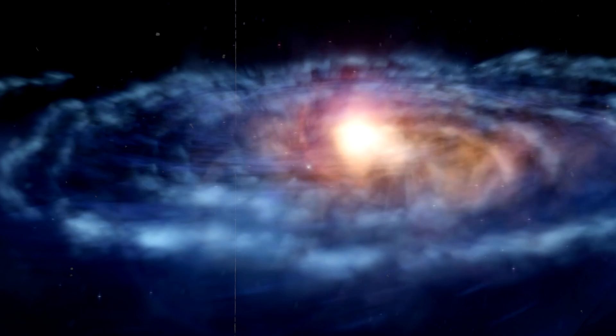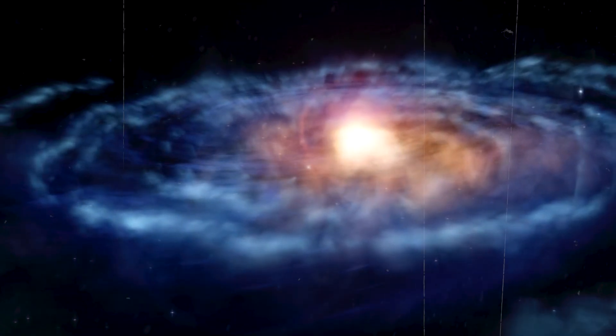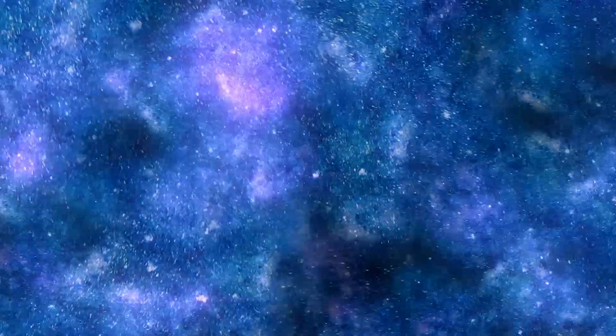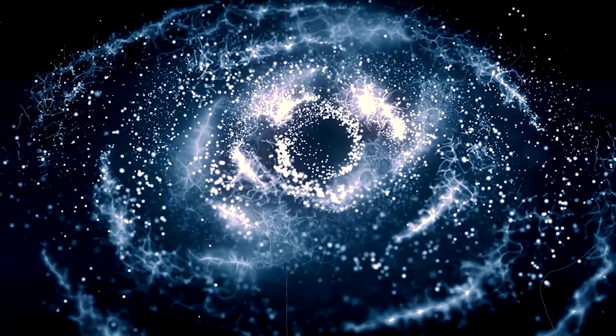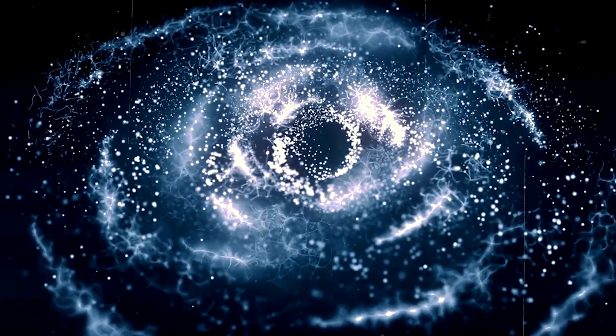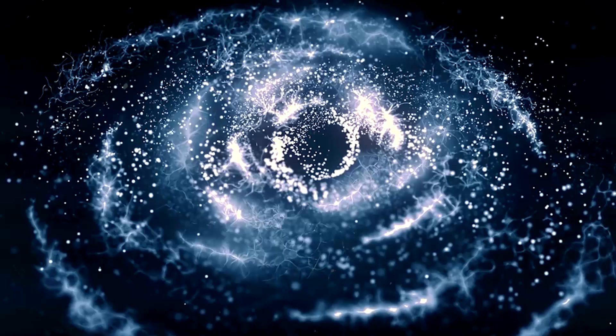The Big Ring is so large that it defies our current understanding of how the universe formed. According to our current models, the universe should be relatively smooth and evenly distributed on large scales. However, the Big Ring is a massive anomaly, suggesting that there may be something we don't understand about the universe.